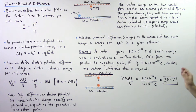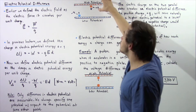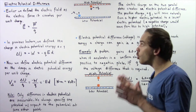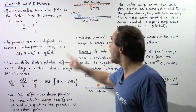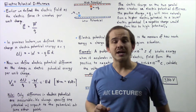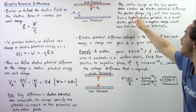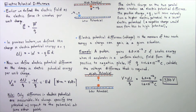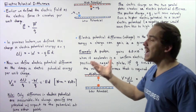The electric charge on the two parallel plates creates an electric potential difference. If we take a positive charge and place it by the positive plate, it will move from the high potential to the low potential — a positive charge will always move from a high voltage to a low voltage. But an electron, or a negative charge, because it has the opposite sign, will move in the opposite direction — from the low potential to the high potential.